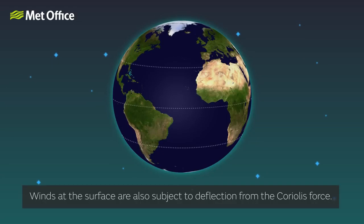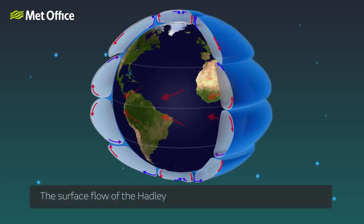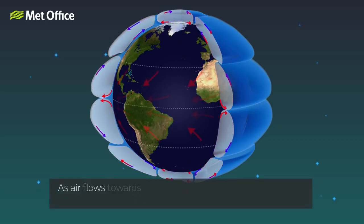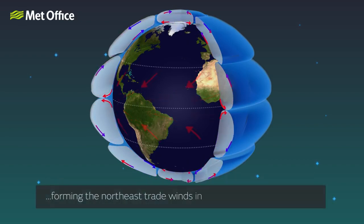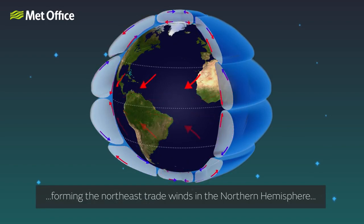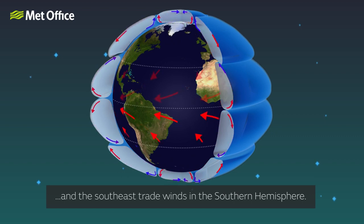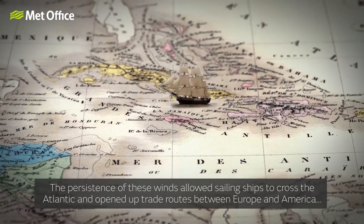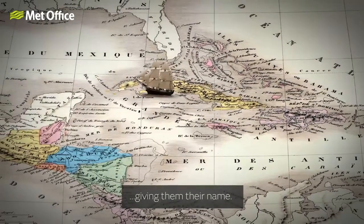Winds at the surface are also subject to deflection from the Coriolis force. The surface flow of the Hadley cells forms the persistent trade winds. As air flows towards the equator, it is deflected towards the west in both hemispheres, forming the northeast trade winds in the northern hemisphere and the southeast trade winds in the southern hemisphere. The persistence of these winds allowed sailing ships to cross the Atlantic and opened up trade routes between Europe and America, giving them their name.